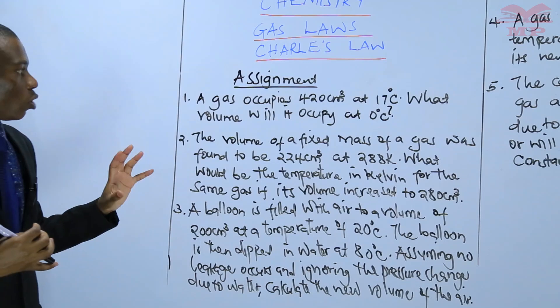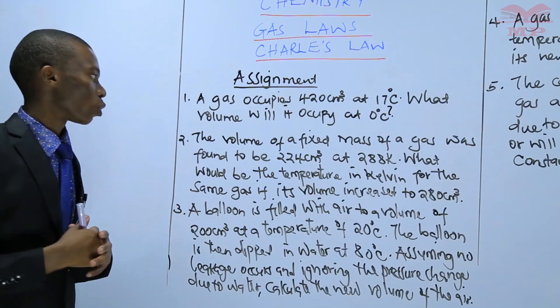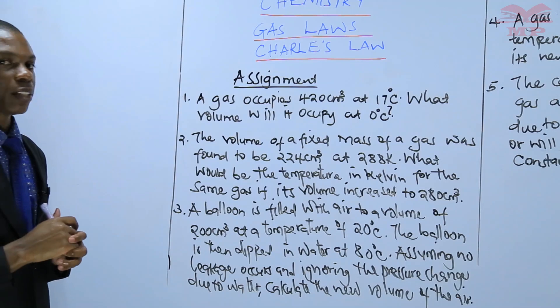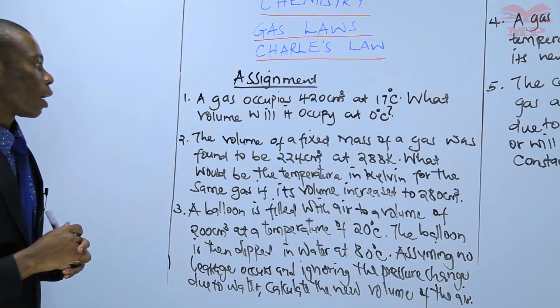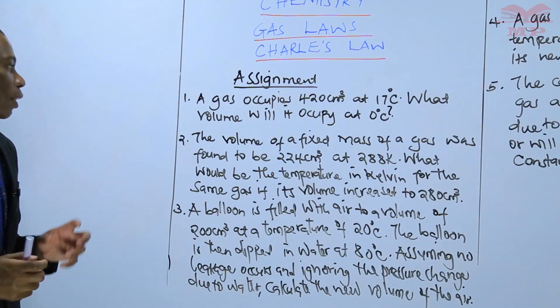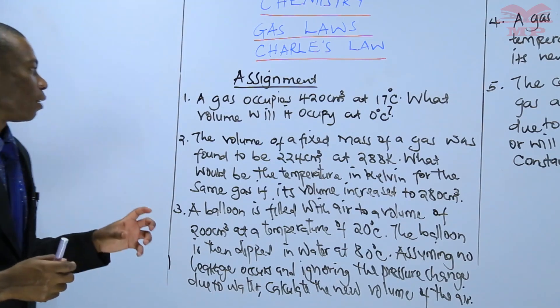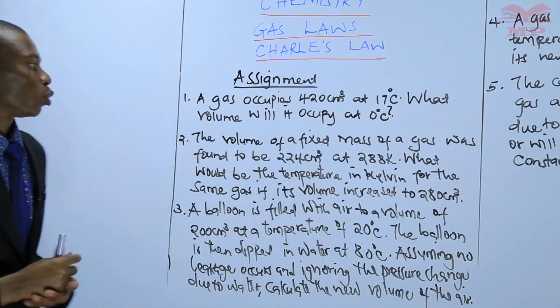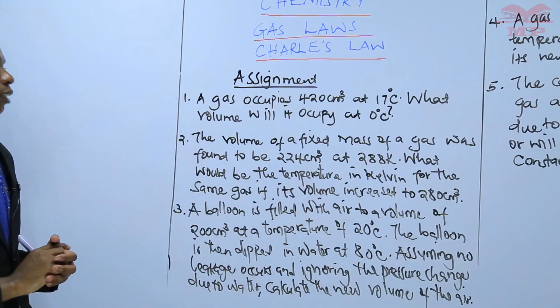Second, the volume of a fixed mass of a gas was found to be 224 centimeters cubed at 288 Kelvin. What would be the temperature in Kelvin for the same gas if its volume increased to 280 centimeters cubed?